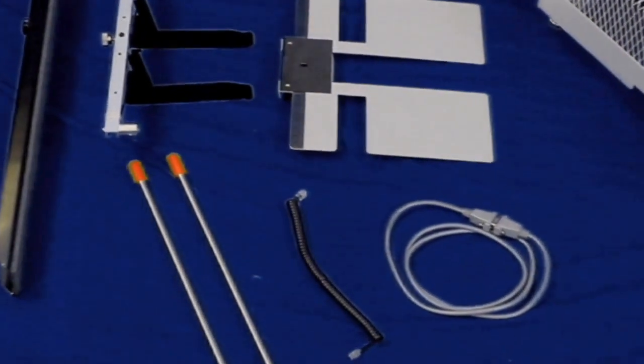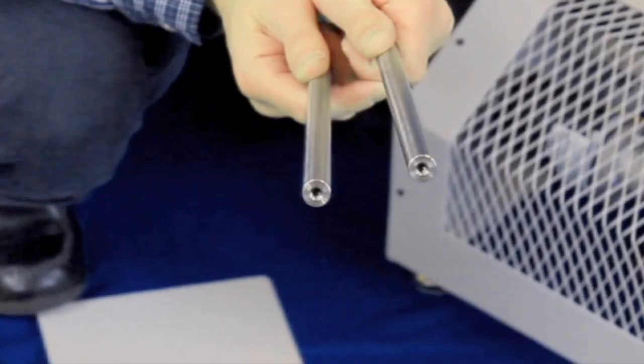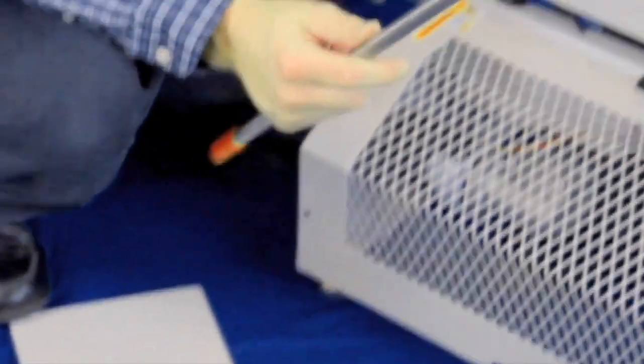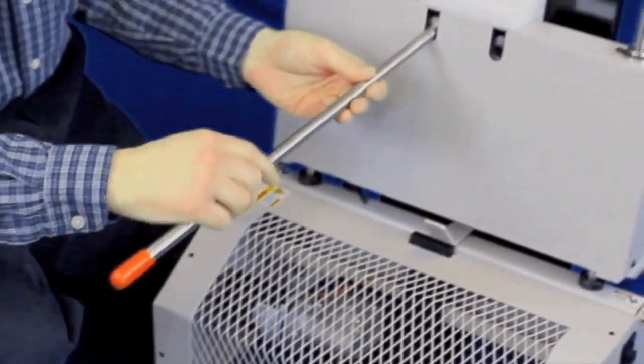Unbox the feeder and unwrap all parts. Set the feeder upright on the floor. Insert the media guide rails and thread until hand tight.